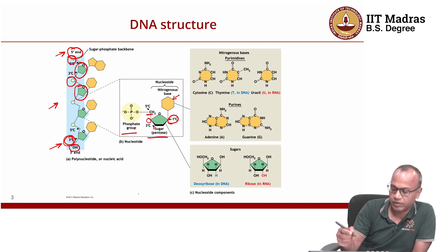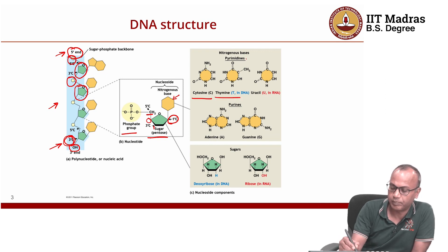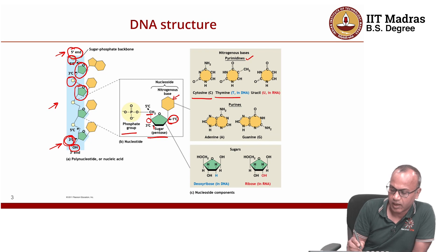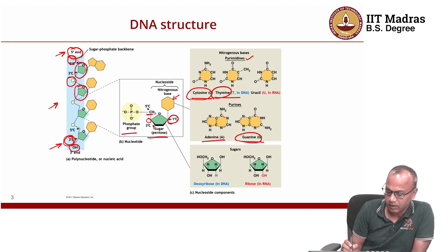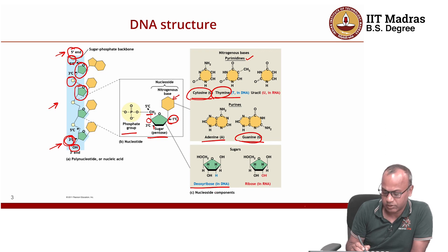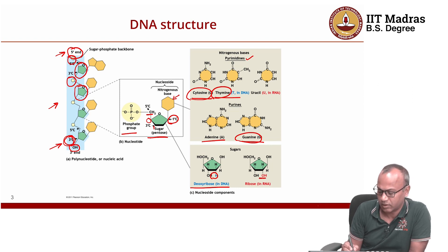There are four bases: A, C, T, and G. Cytosine (C) and thymine (T) are called pyrimidines — these are 6-membered carbon ring structures with nitrogen. Adenine and guanine are purines — two-ring structures. Purines always pair with pyrimidines: adenine pairs with thymine, and guanine pairs with cytosine. There are also two different sugar molecules: deoxyribose, where the oxygen at the second carbon is missing, and ribose sugar, where the hydroxyl group is present.